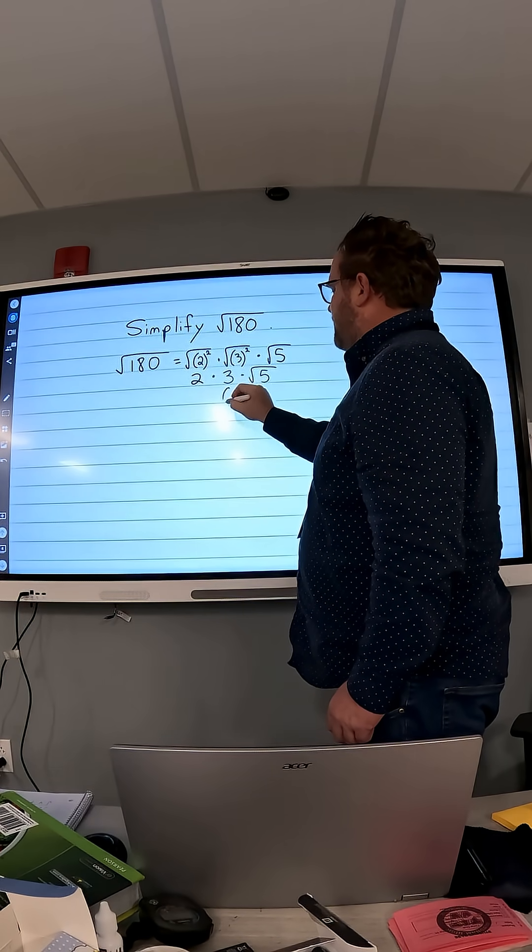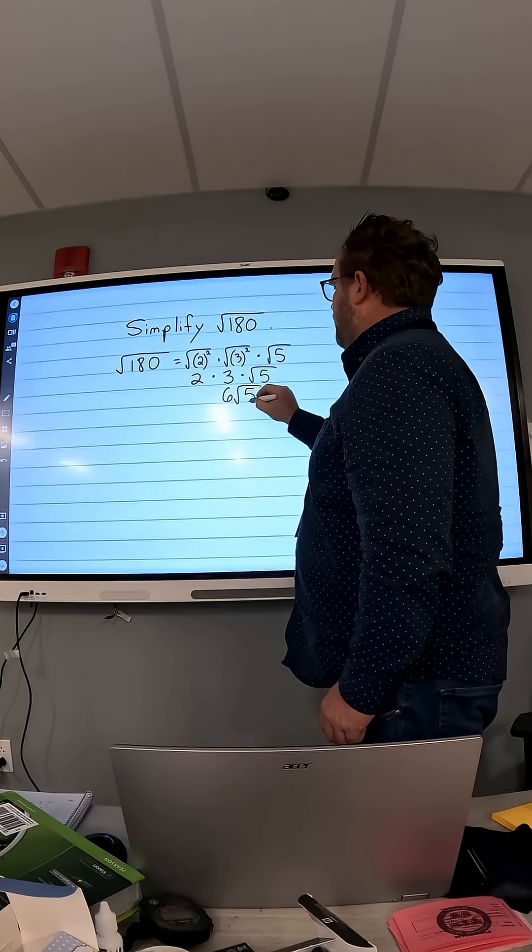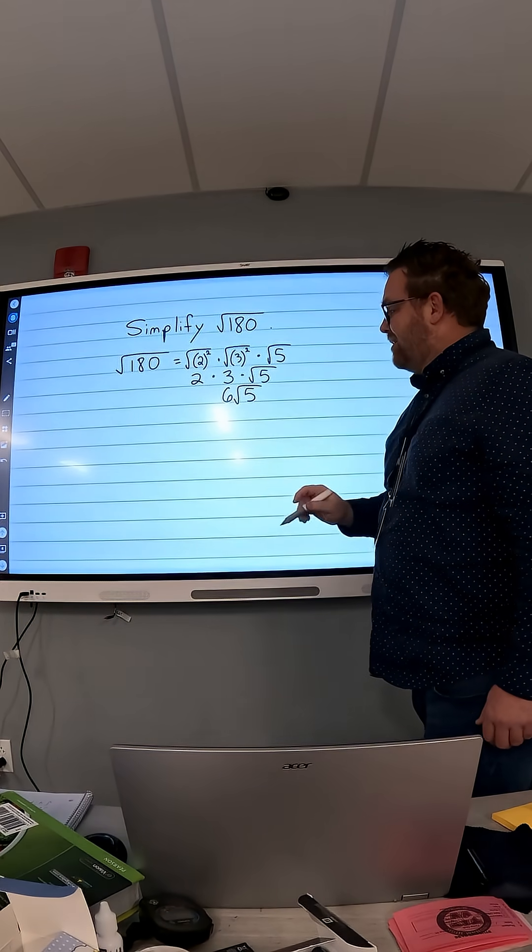Okay, so 2 times 3 is 6 times the square root of 5. So the square root of 180 is 6 square roots of 5.